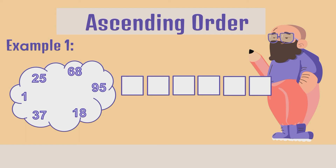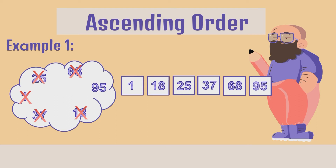Let's start with the smallest number. Which do you think it is? 1. Very good. Cross out 1. Next is 18. Cross out 18. Next we have 25. Cross out 25. Next is 37. Cross out 37. Next is 68. Cross out 68. And the biggest number is 95. Very good. Again, this is ascending order — we started with the smallest number: 1, 18, 25, 37, 68, and 95.